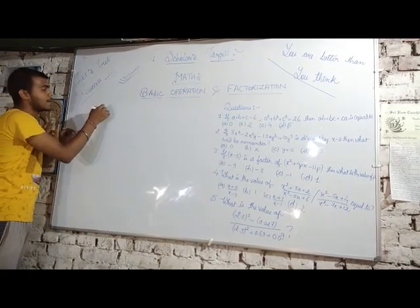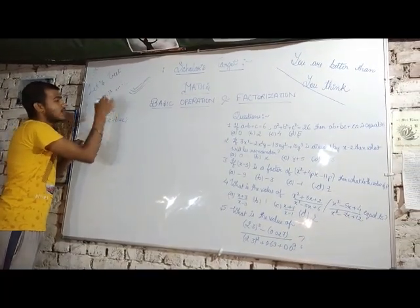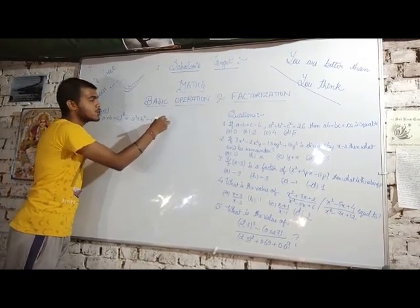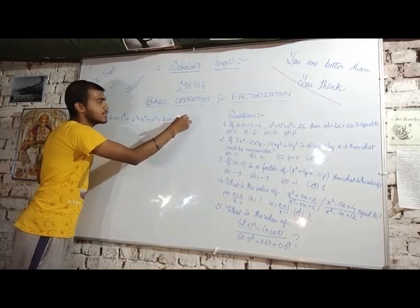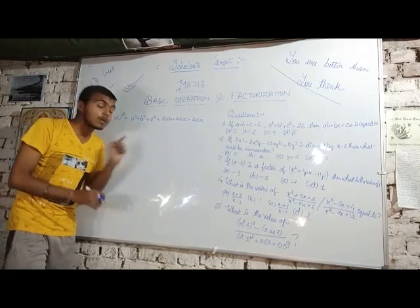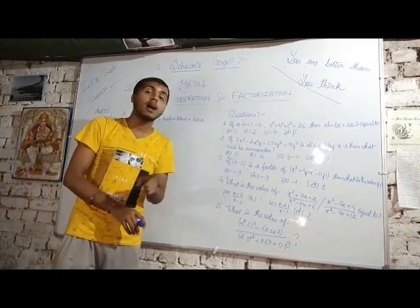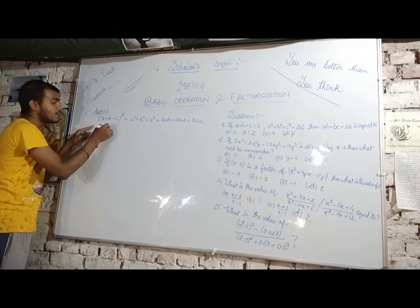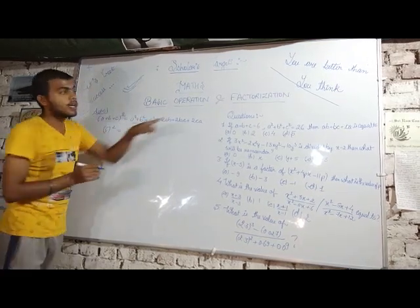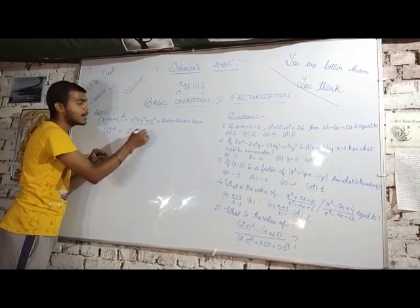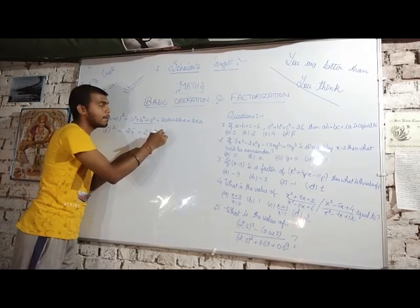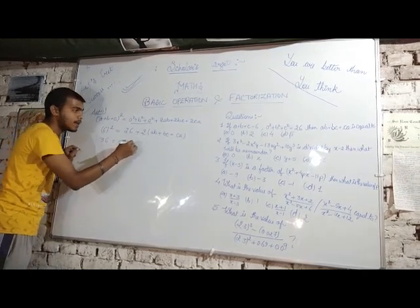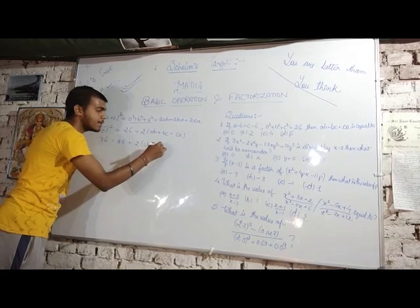So solution number one: (a + b + c)² = a² + b² + c² + 2ab + 2bc + 2ca. I had written these formulas earlier precisely because they are used for solving questions. Now, a + b + c = 6, so (6)² = 36. And a² + b² + c² = 26. So: 36 = 26 + 2(ab + bc + ca).